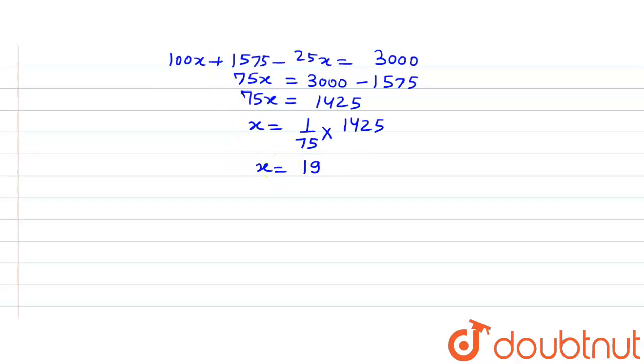So this X is, and what was this X? This X was the total number of winners, and that is what has been asked in the question. So the final answer would be, hence, the number of winners is 19.